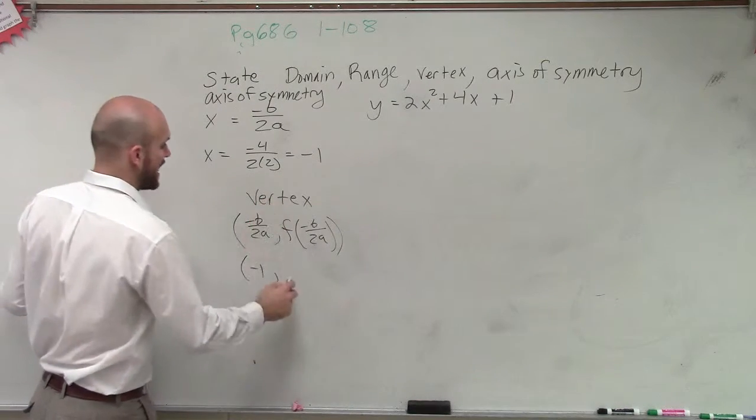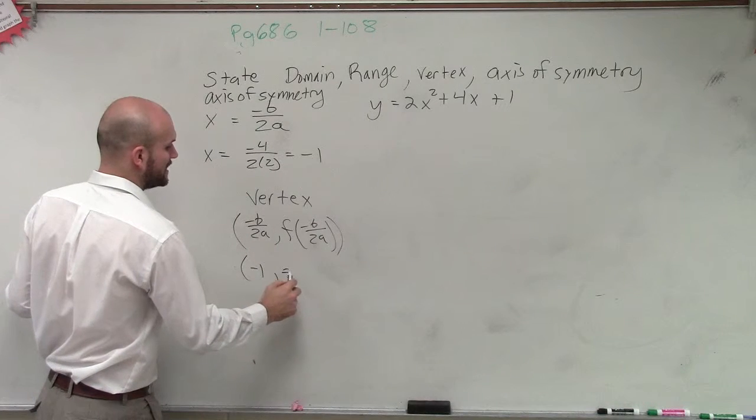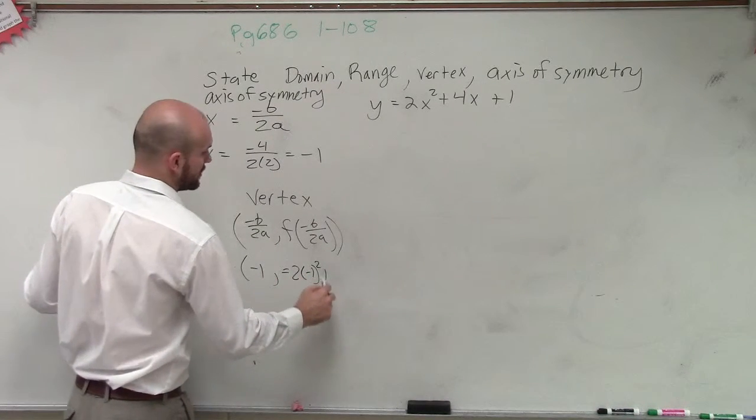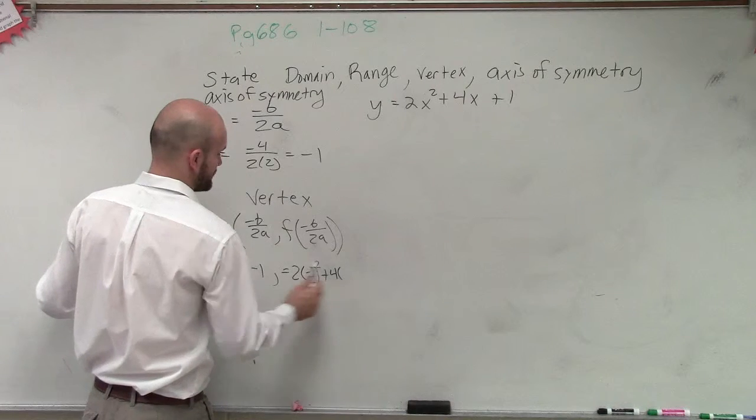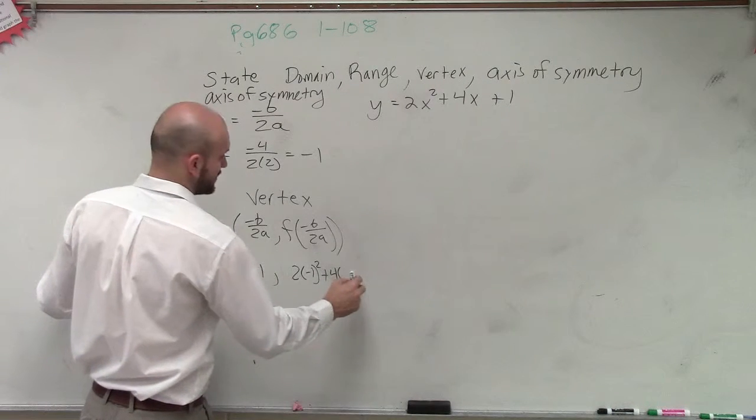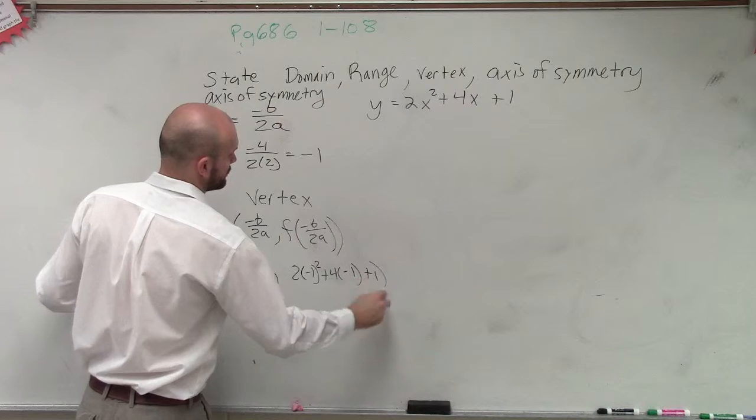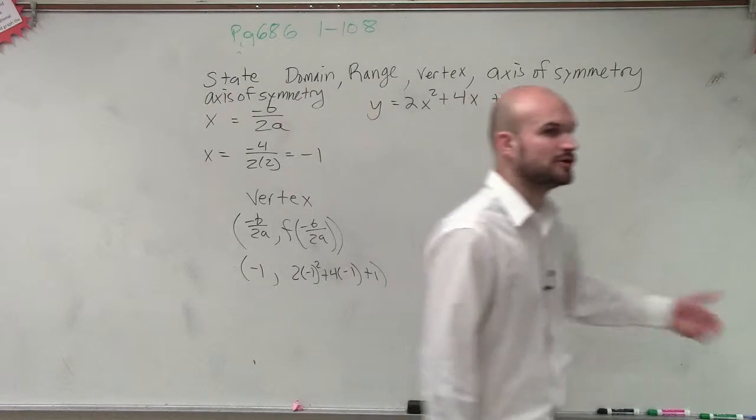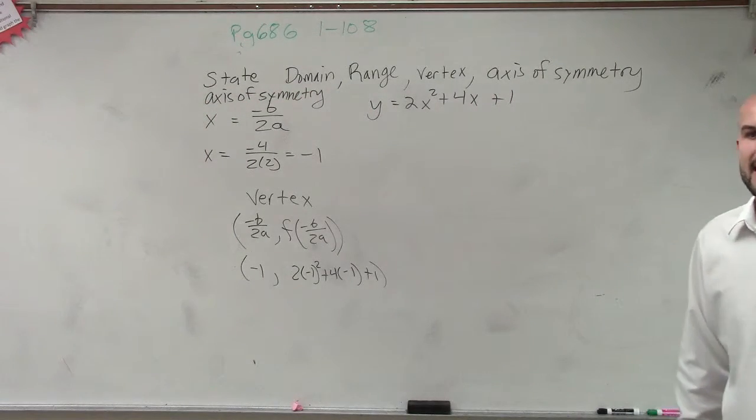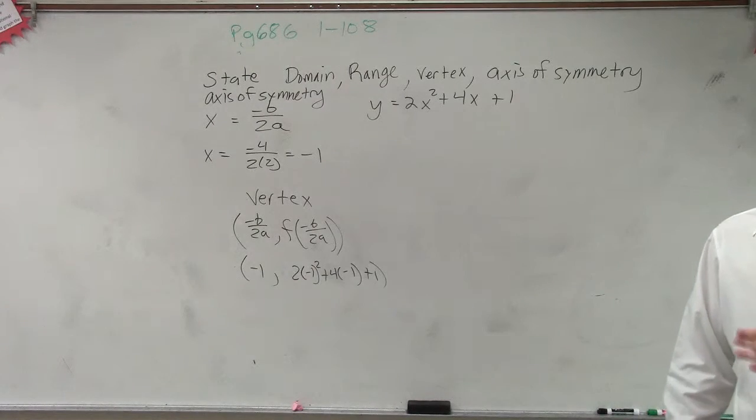But to find f of that, we just say equals 2 times negative 1 squared plus 4 times negative 1 plus 1. So what you're doing is now you have the x value, you're going to plug that in for x to find the y value.